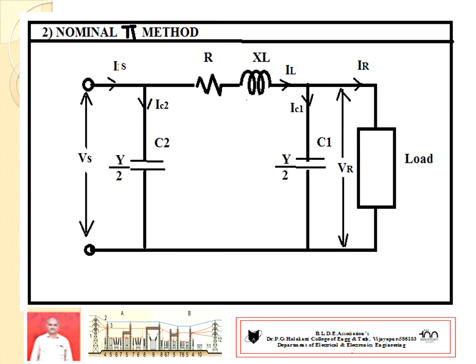IC1 and IC2 are the currents flowing through the capacitances. IC1 flows through the capacitance nearer to the receiving end side; IC2 is the capacitance current nearer to the sending end side. IR is the load current or receiving end current. Voltage VR is available across C1, so by knowing VR you can determine IC1. From the load condition of power and power factor, you can calculate IR. The vector sum of IC1 and IR gives line current IL. Then VS equals VR plus the voltage drop of the series impedance, that is IL times R plus j·XL, or IL times Z.